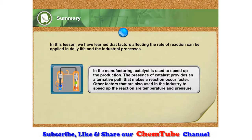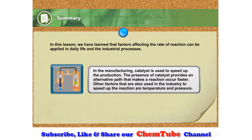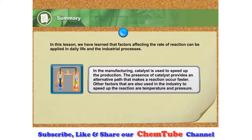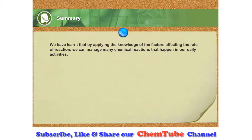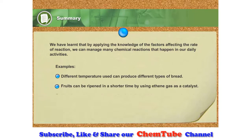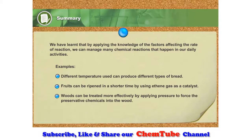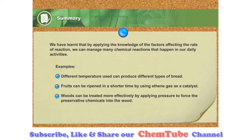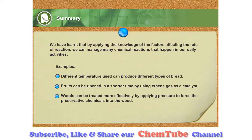In the manufacturing process, a catalyst is used to speed up production. The presence of a catalyst provides an alternative path that makes a reaction occur faster. Other factors used in industry to speed up reactions are temperature and pressure. By applying the knowledge of factors affecting the rate of reaction, we can manage many chemical reactions in our daily activities — for example, in baking bread, different temperatures produce different types of bread. Fruits can be ripened in a shorter time using ethane gas as a catalyst. Woods can be treated more effectively by applying pressure to force the preservative chemicals into the wood. By applying this knowledge, we can also predict the consequences of a particular reaction and make relevant decisions using a structured problem-solving approach.